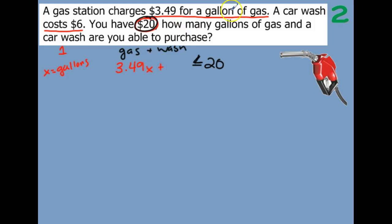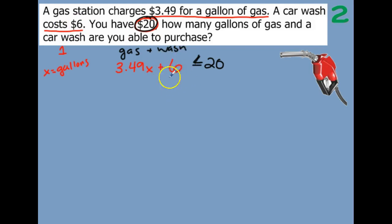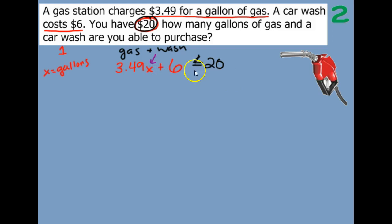Plus a car wash, which costs $6 — so just plus 6. We are only getting one car wash, so we're only doing this one time. So we need to basically solve this to figure out how many gallons of gas we can buy if we're also buying a car wash.